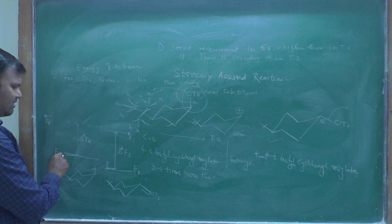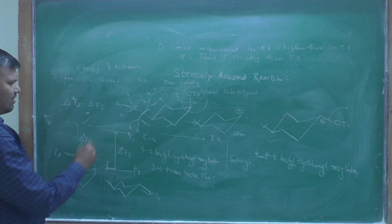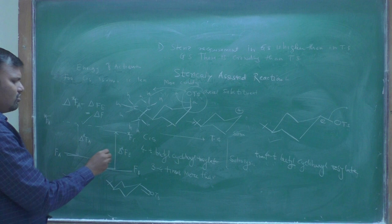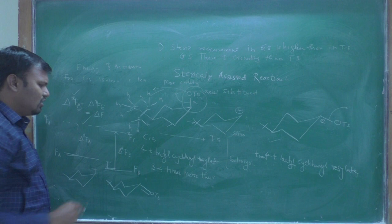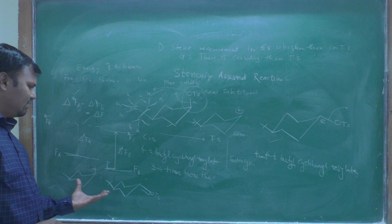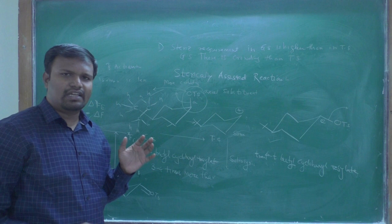The difference between the transition state energy F-star and the ground state energies gives us the activation energies. Delta-F-star-a minus delta-F-star-e equals the difference in free energy. This free energy difference can be calculated by taking the difference between the activation energies. This confirms that the sterically assisted reaction involves more crowded substituents reacting faster than the less crowded ones.